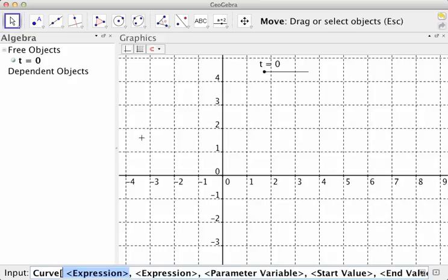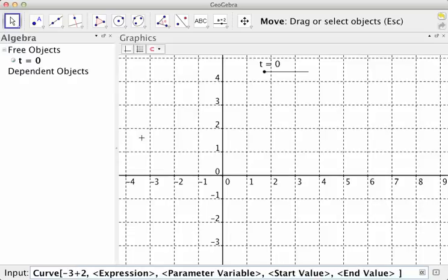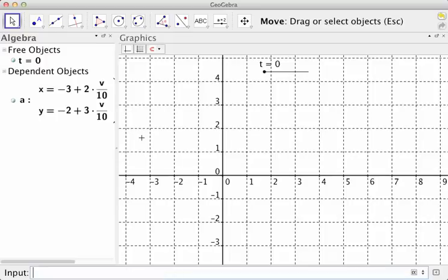The first thing I need is an expression for x. Let's say negative 3 plus 2. I'm going to use v here because t is going to be the upper bound. And let's say negative 2 plus 3v. I'll make this over 10 so that it takes the full slider to do what I need it to. The parameter, since I use v there, I'm going to type a v. I'm going to have it start at 0 and end at t, whatever t is. So I'll press enter.